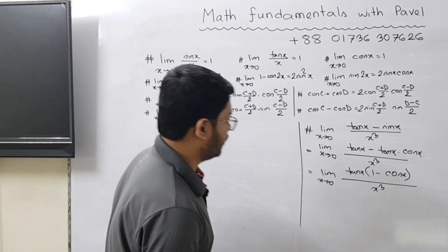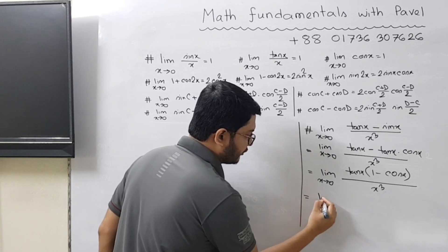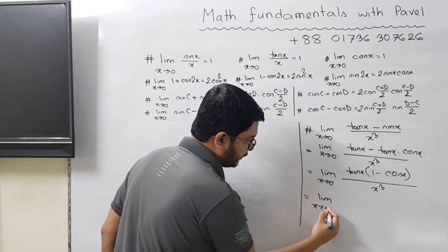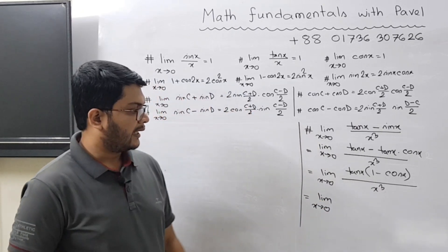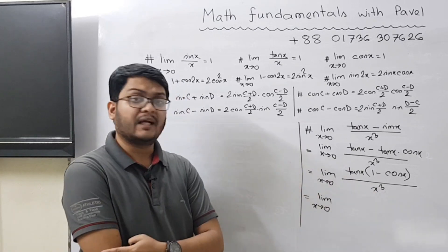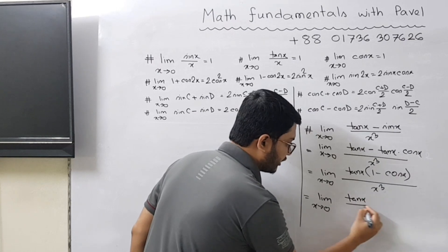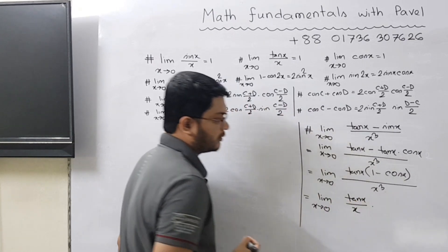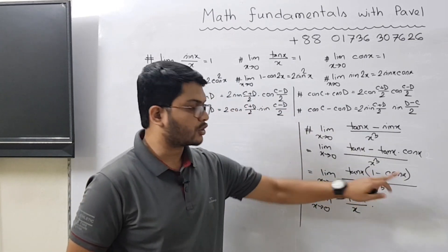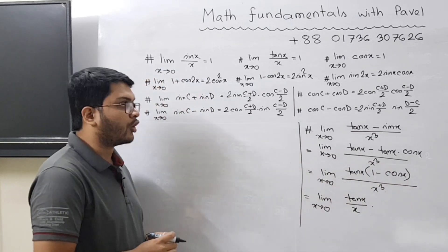Now what we can do here is write it as limit x tends to 0, and this x³ we will split into two parts. So we will write this as tan x divided by x, times this 1 minus cos x—we can apply the formula.